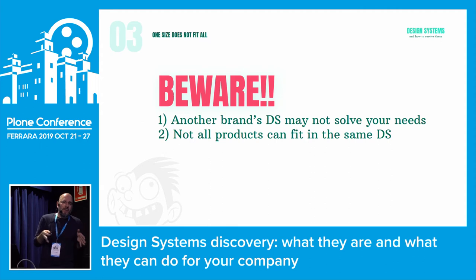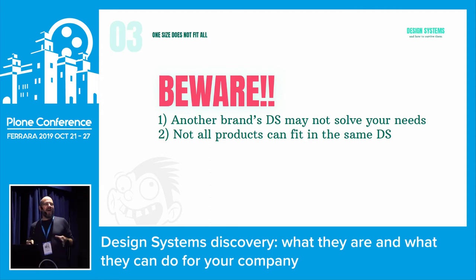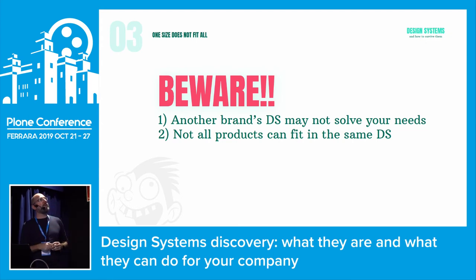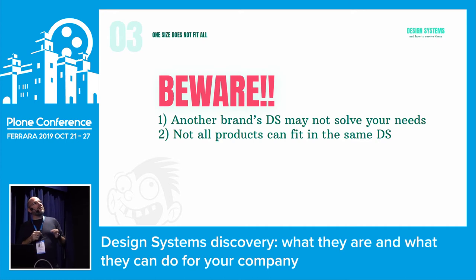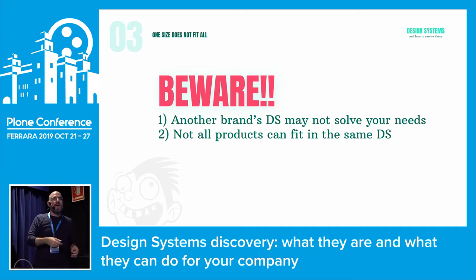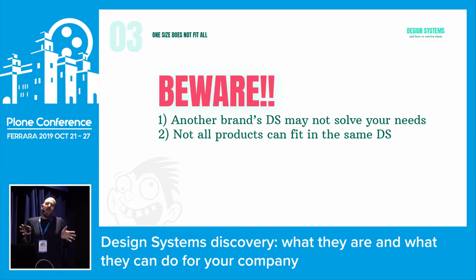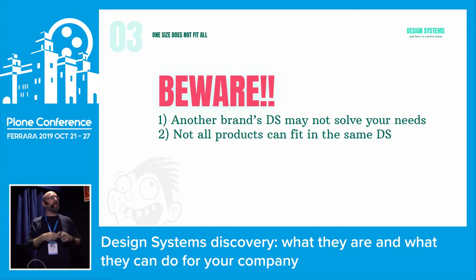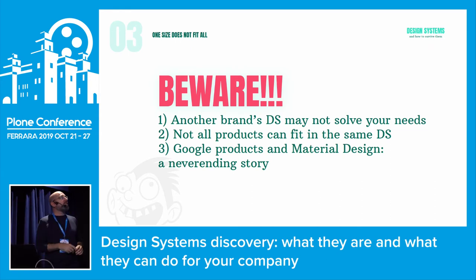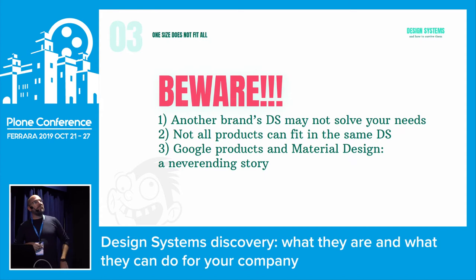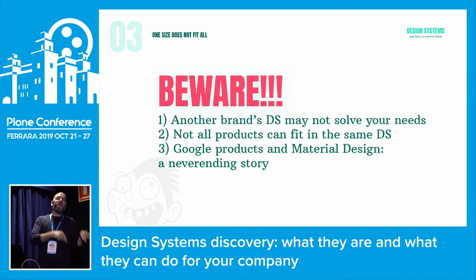Not all your products may fit in the same design system. You may have a design system that works beautifully for your pharmaceutical business unit, but doesn't work for another. You have to build a design system for what you need to build. And don't feel forced to use it on every product. Material Design came out five years ago and still today many Google products are not using it — because not all design systems fit every product.